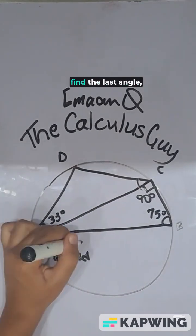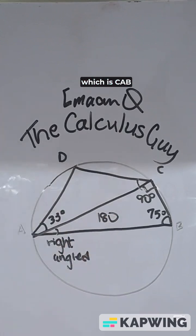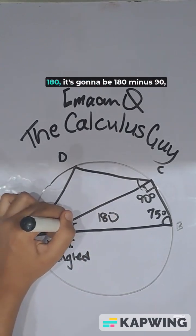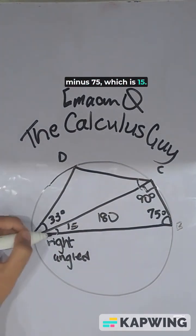That means you can easily find the last angle which is CAB. Since triangle angles add up to 180, it's going to be 180 minus 90 minus 75 which is 15.